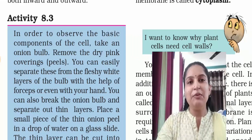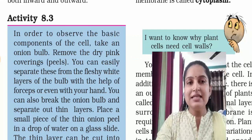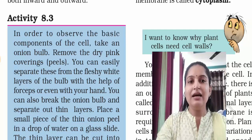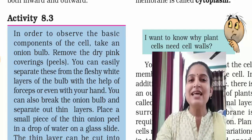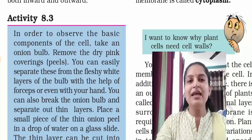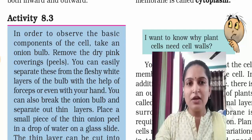Now we will see Activity 8.3: to observe the basic components of the cell, we take an onion. If we go through this experiment, we can see exactly how the cell looks. What we have to do is take an onion and remove the fleshy coverings from the surface.